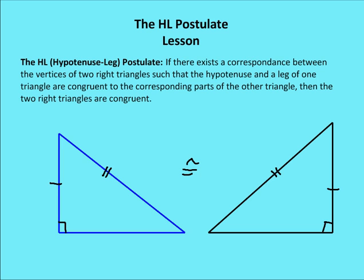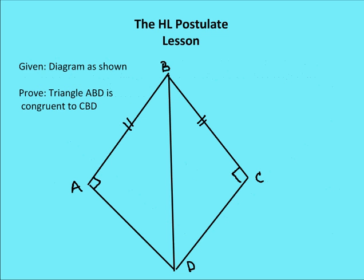That's the end of the lesson, with the exception of using this theorem or postulate in a two-column proof and also proving the postulate itself. I want you to think about this particular diagram — you can stop the video. We're given the diagram as shown, and we're going to use this diagram to prove the HL postulate. We want to prove that triangle ABD is congruent to triangle CBD.